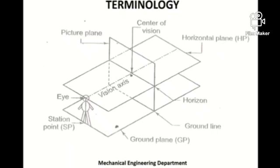Unlike orthographic projection, the observer will always be standing at a finite distance from the picture plane. This distance will be given in the problem statement, or if not mentioned, there is an empirical relation we will discuss later to determine this finite distance. The role of the picture plane in perspective drawing is to obtain the perspective projection of the object — the perspective projection will be captured on this picture plane.